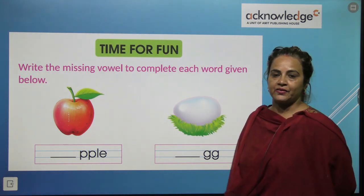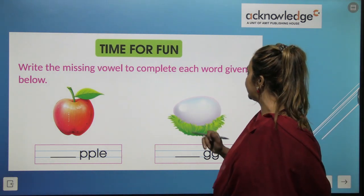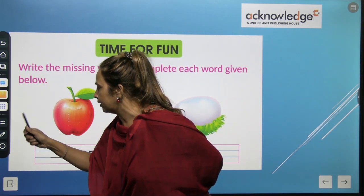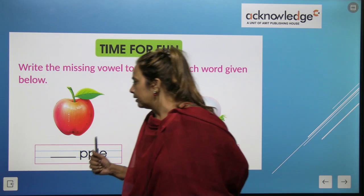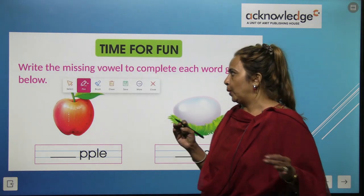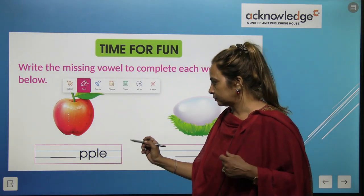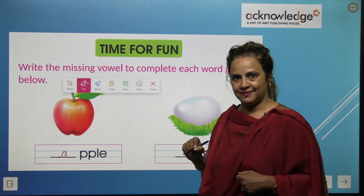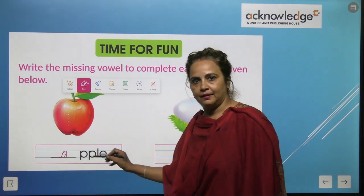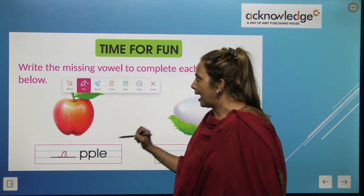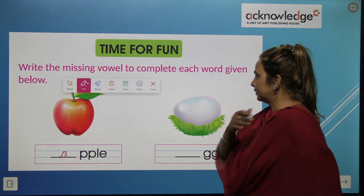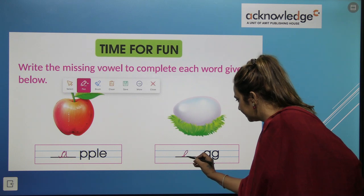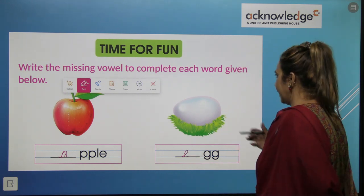So, time for fun. Write the missing vowel to complete each word given below. You know, I want to explain one thing. In vowels A, E, I, O, U, when the letters start from A, this is apple. A is missing. So A, P, P, L, E, apple.